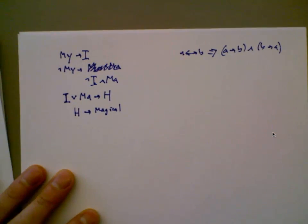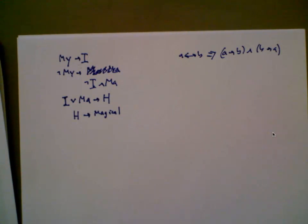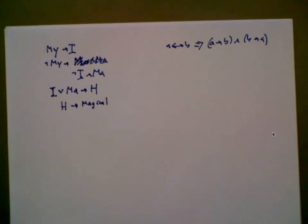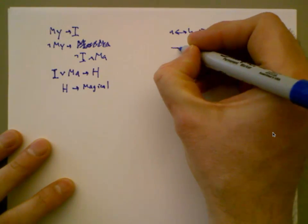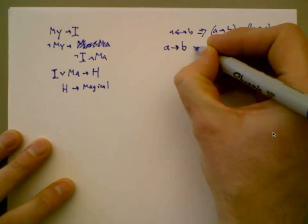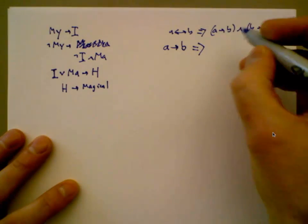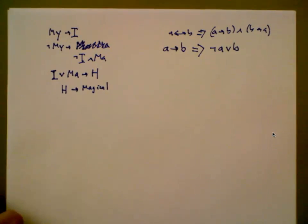For me, it's all about deriving stuff. There's one thing you have to remember, and if you know that, you can derive everything else you need to know about the whole logic part of the class: implication. A implies B is entirely equivalent to not A or B. Remember that.